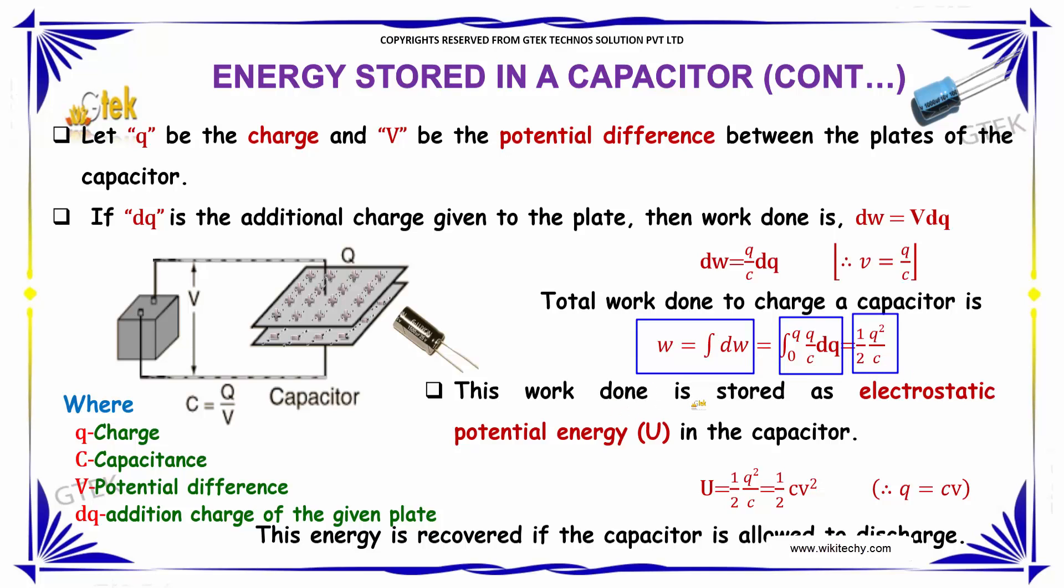So this is the work done which has been stored as electrostatic potential in the capacitor. The electrostatic potential energy is represented as U.